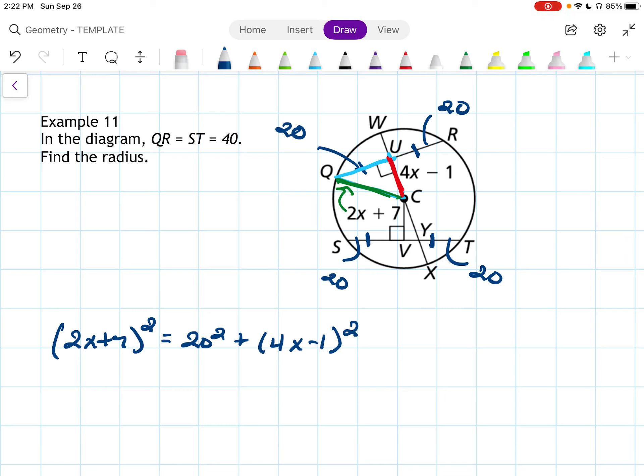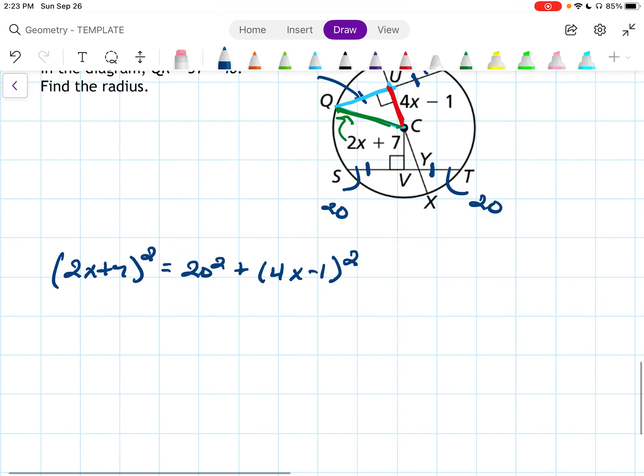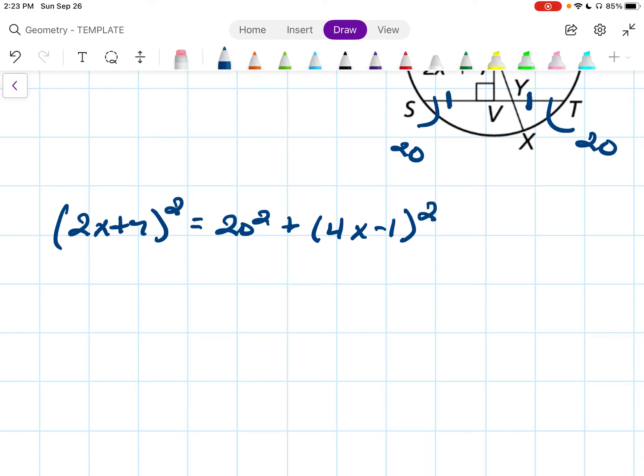This is a univariable equation, an equation with just one variable, so we're going to be able to solve it and get our x equals from this. So right here I will have, think about this as 2x plus 7, 2x plus 7. This is going to be 4x squared plus 28x plus 49 equals 400 plus 400 plus. And again, with this piece squared here, I think about it as if it was split up like that, and I have 16x squared minus 8x plus 1.